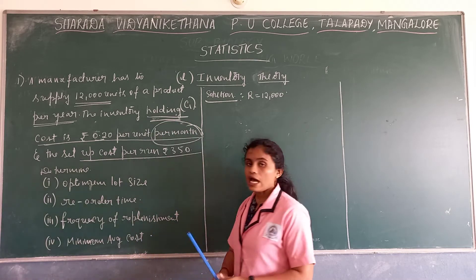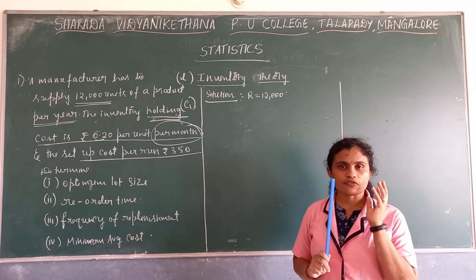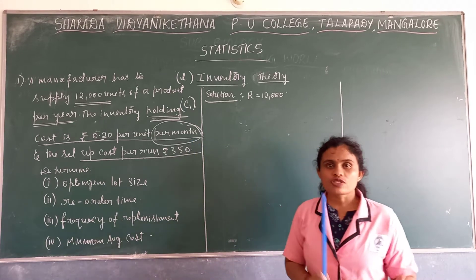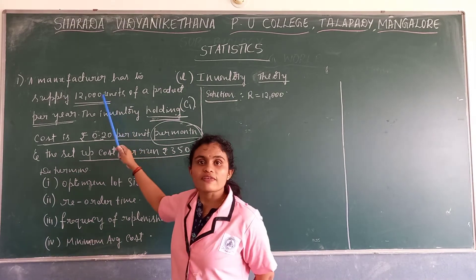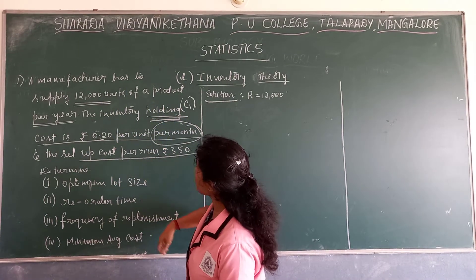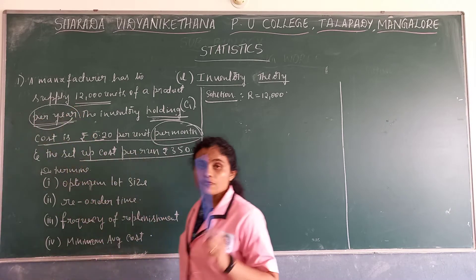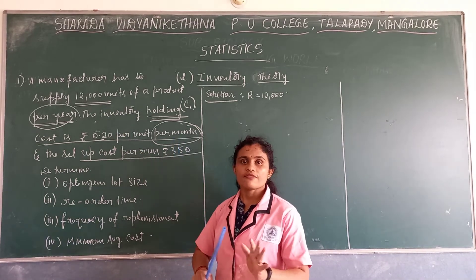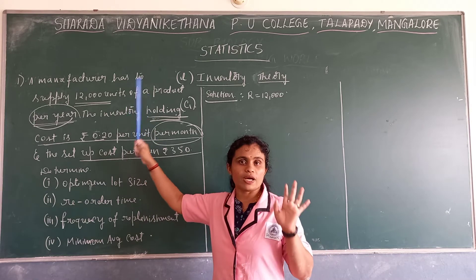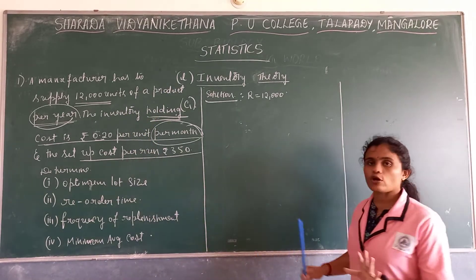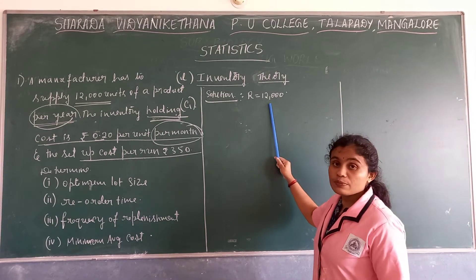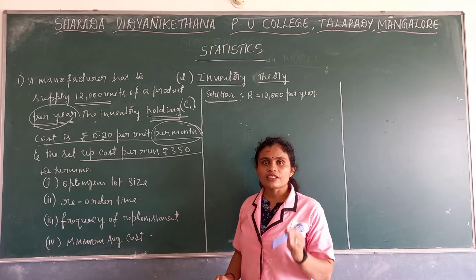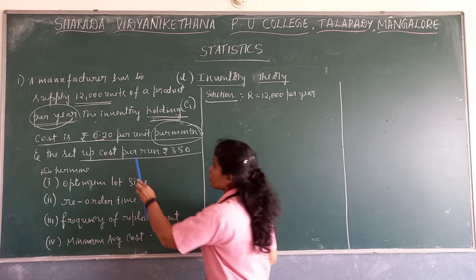This is very, very important. We always need to check C1 first — whether it is per year or per month. Here C1 is per month. When C1 is per month, we need to check whether demand is also per month or per year. Here demand is given per year. We always need to convert demand according to the holding cost unit; we are not allowed to convert the holding cost according to demand.